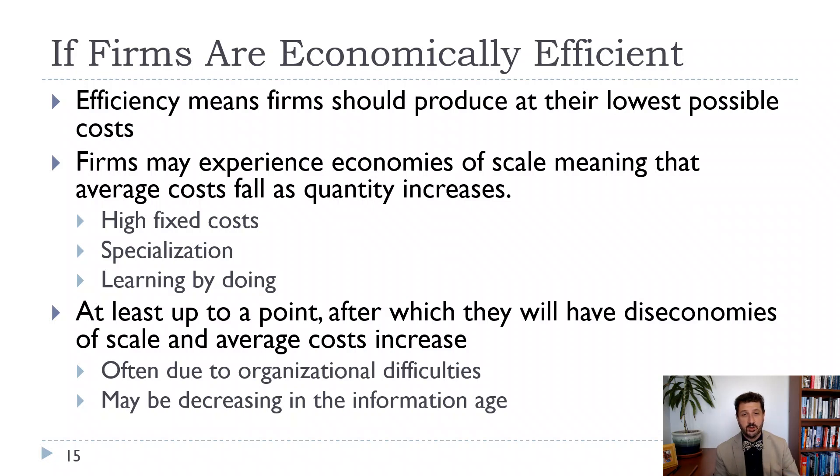We often find that firms experience economies of scale, at least when they are starting out and producing more quantities. So they might have high fixed costs like factories or stores or trucks or whatever. Specialization might benefit them and they probably learn. They learn how to be more efficient. And so in that case, their average cost will be falling and they'll be experiencing economies of scale, at least up to a certain point. And after that point, we expect average costs to increase. So once you've gotten as much as you can out of those fixed costs, you've learned as much as you can, you've benefited from specialization enough, then we expect average costs to increase.